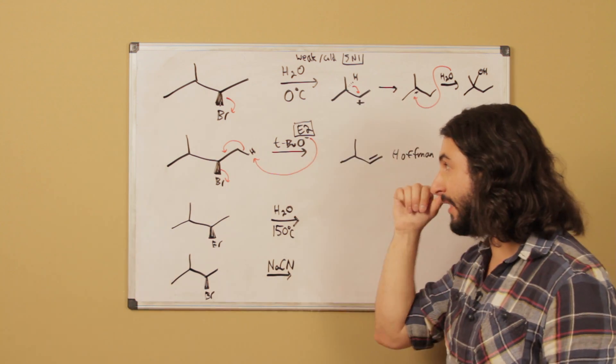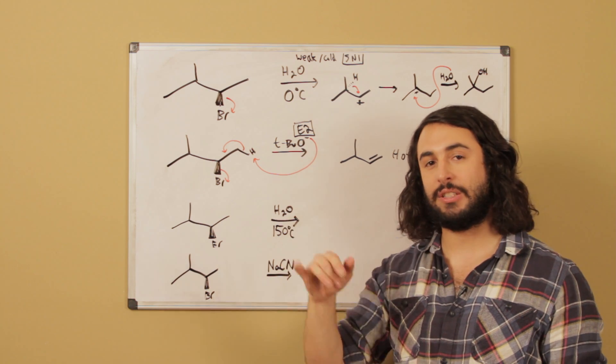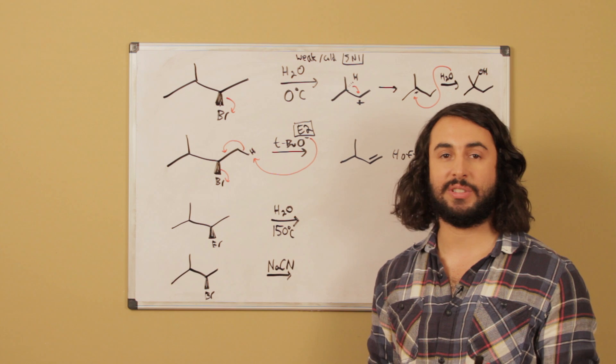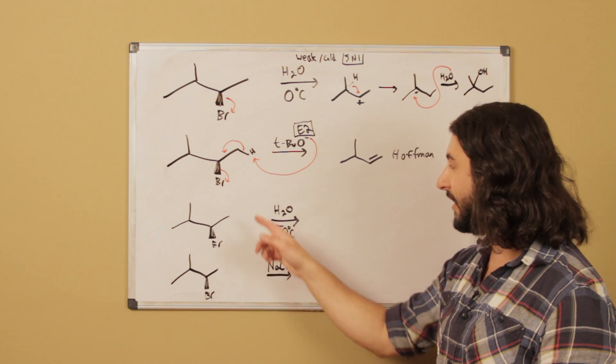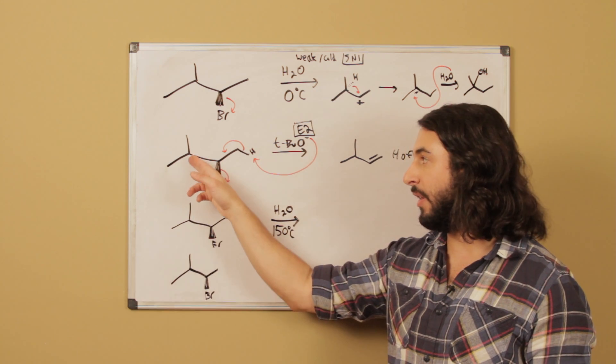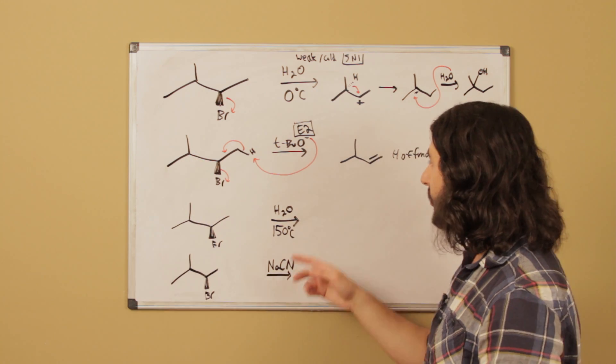So once again that is because of the strength of the base that we know that's either E2 or SN2, the steric hindrance that we know that it is elimination over substitution, and then once again the steric hindrance that caused us to grab this more sterically available proton than the one in the interior of the molecule. So that's number two.